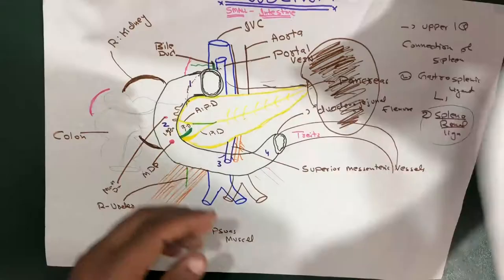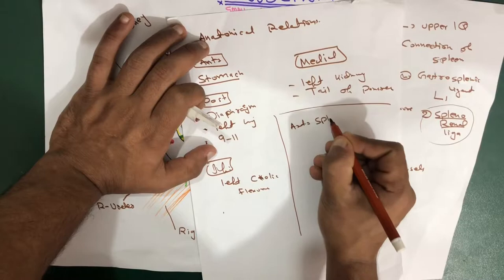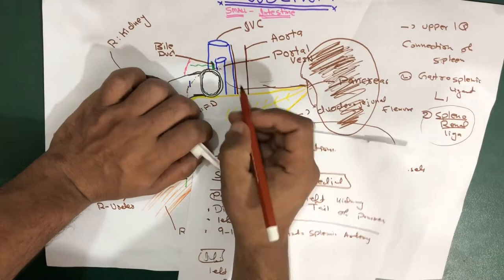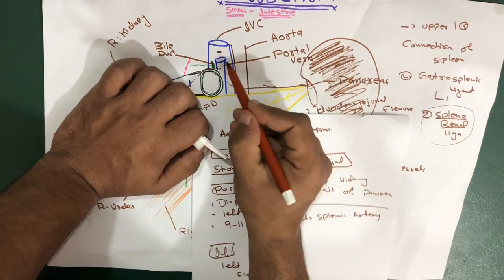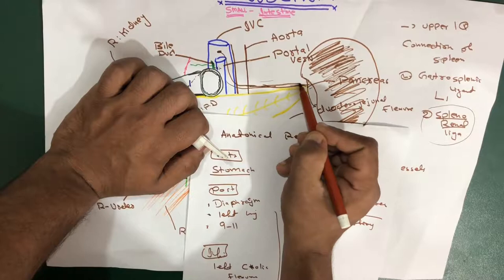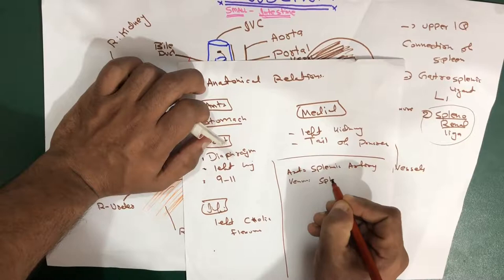Now let's talk about the vasculature, or you can say arterial supply. The arterial supply of the spleen is the splenic artery. The splenic artery comes from your celiac trunk, which arises from the abdominal aorta — there are three branches of the celiac trunk, and one of them is your splenic artery. The splenic artery goes superior to the pancreas and enters the hilum. Venous drainage is also by the splenic vein.